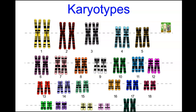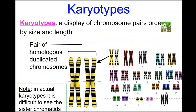Karyotypes line up chromosomes based on height, along their centromere positions. You can see that homologues are the same size, same shape based on centromere location, and same length, with different banding patterns representing gene locations. A karyotype is a display of chromosome pairs ordered by size and length. In an actual karyotype it is difficult to see the sister chromatids within each pair — typically you just see the banding patterns.